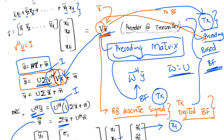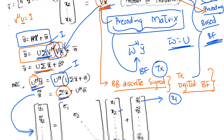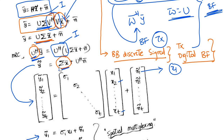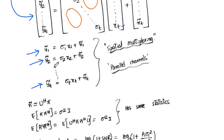Once we do this pre-coding, at the receiver we perform receive beamforming using U^H, and finally we are left with Σ. The main goal in MIMO is to get the diagonal matrix — and that's exactly what we get here. All off-diagonal terms are zero. This means we have parallel channels across antennas, so x1 and x2 are separated out and we are able to recover the signal.